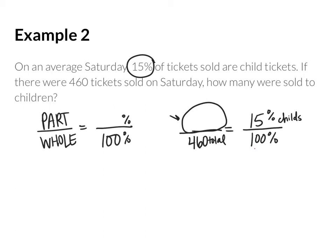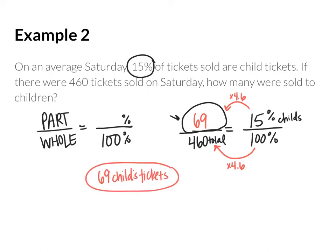This time, we can see that 100 goes into 460 4.6 times. So I multiply 15 by 4.6 and get 69 child's tickets. When you write your answer, be sure to include the context for the problem. It's asking how many were sold to children, so you'd say 69 were sold to children, or 69 child's tickets.